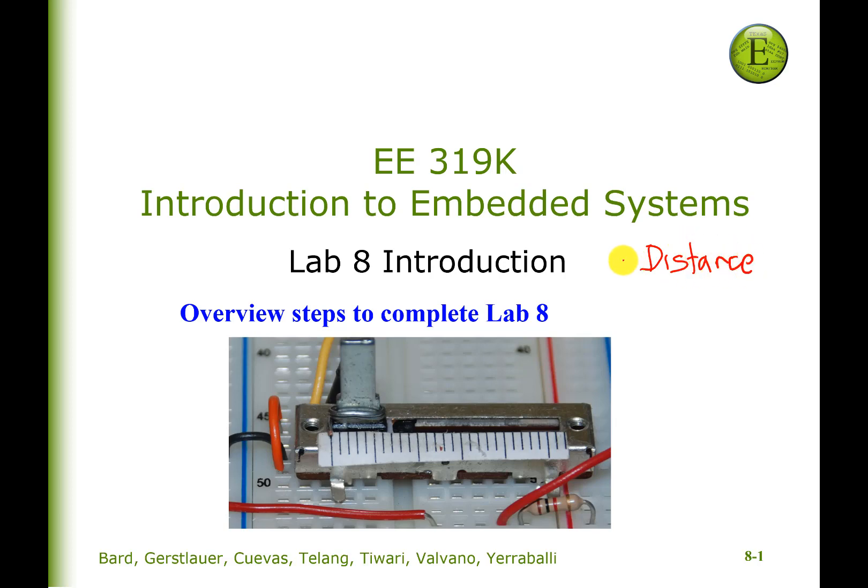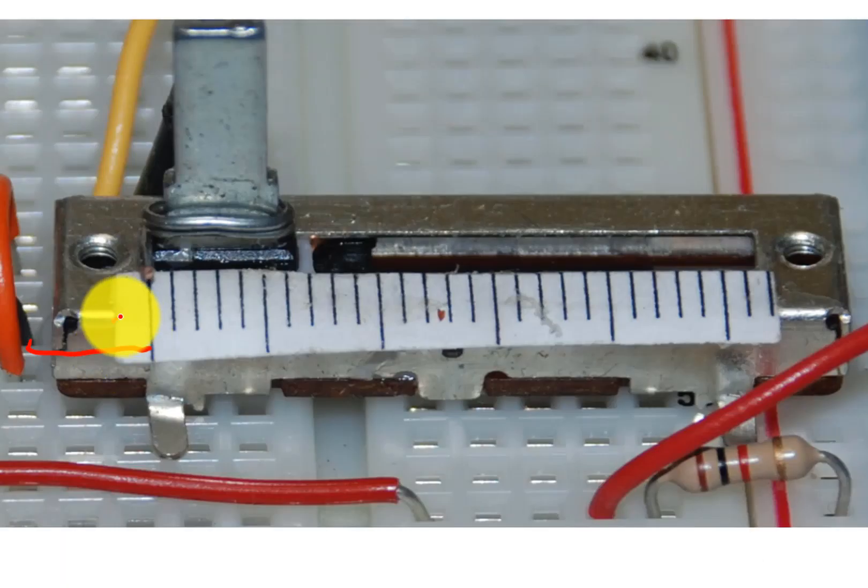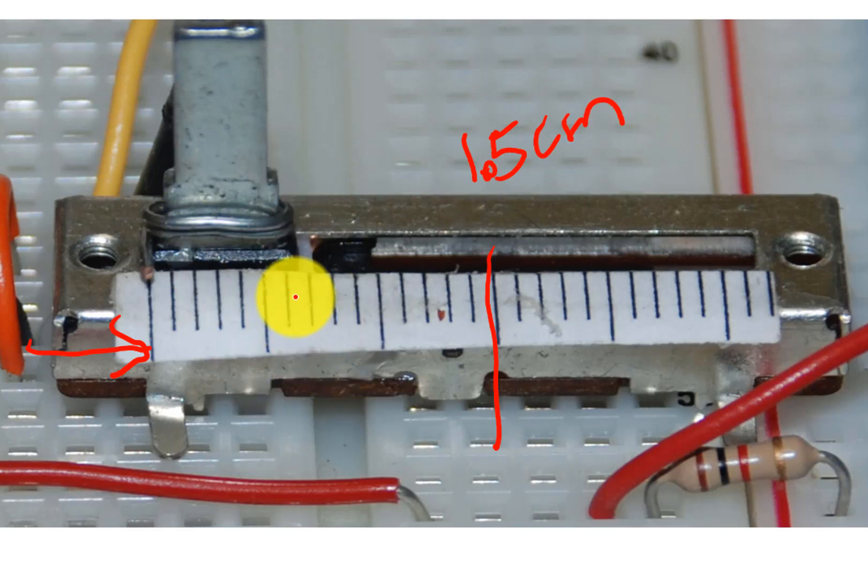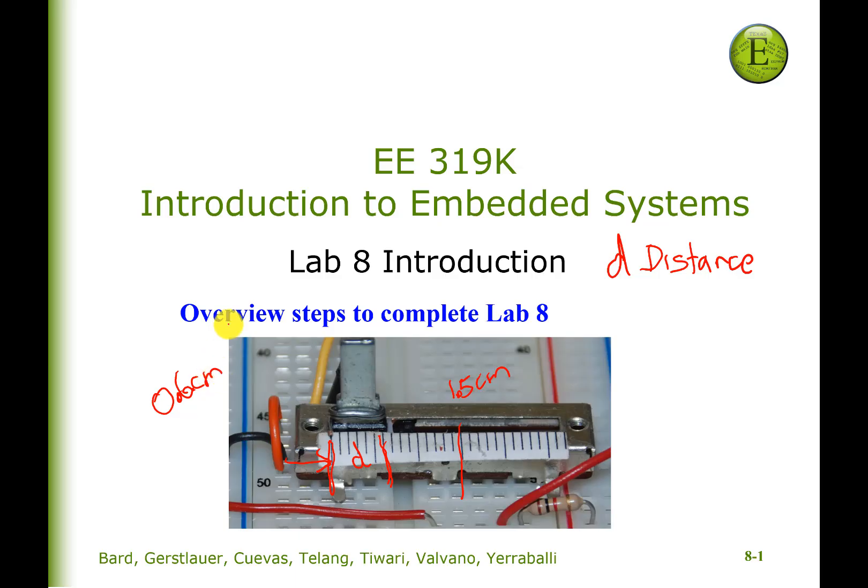Distance, D, is going to be the amount of distance between some point that we define here, say on this ruler, up to a maximum of about 1.5 centimeters. If I slide the slide pot to this spot, the distance here between this line and that line is going to be about, in this particular case, about 0.6 centimeters. So the overall behavior is we're going to have a range in Lab 8 of about 0 to 1.5 centimeters.